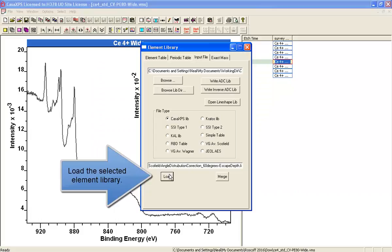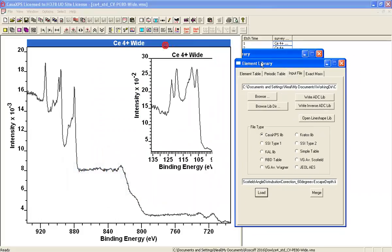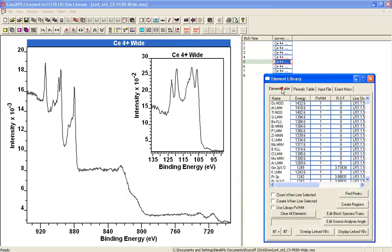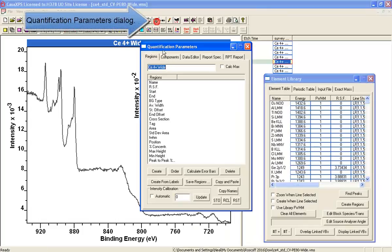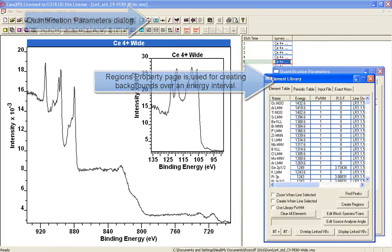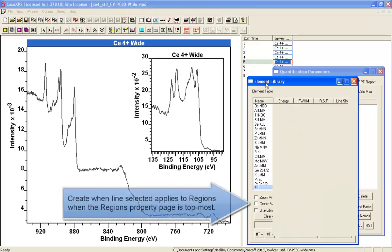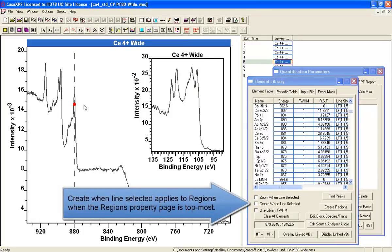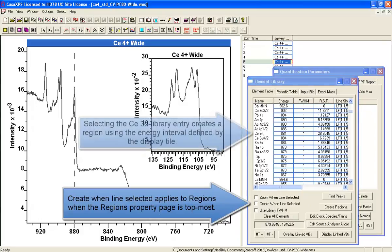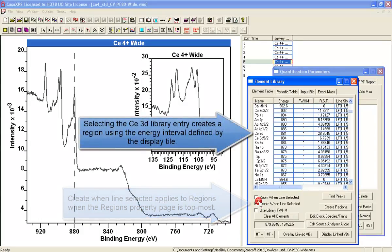We'll add a library which contains Scofield cross sections, corrected for escape depth, and an angular distribution assuming an angle of 60 degrees between the source and the analyzer axes.